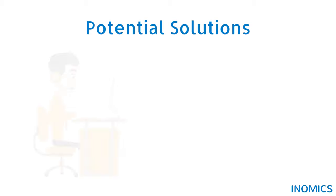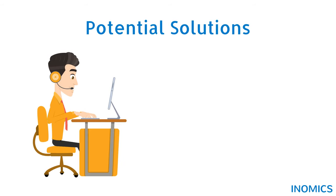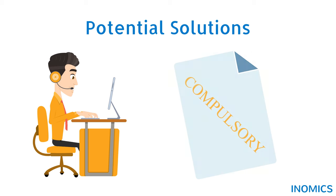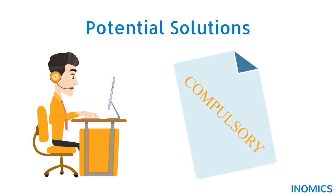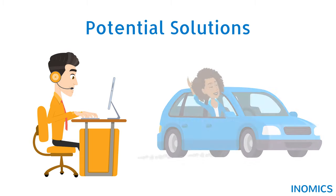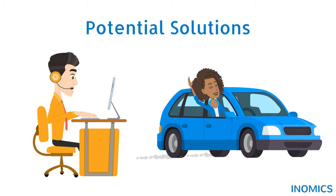Insurance providers and regulators have developed various ways to address the problems of adverse selection and moral hazard. Insurance might be made compulsory, for instance. Therefore safer drivers can get insurance at a lower price because the average risk of all those insured is lower than when it was only drivers like Oscar with insurance. Additionally, many insurers offer no claims bonuses to incentivise people not to act more recklessly once insured.